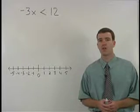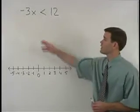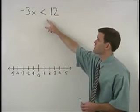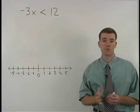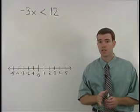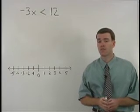When you're asked to solve an inequality like negative 3x is less than 12, your goal should be the same as it was when solving equations: to get x by itself on one side.